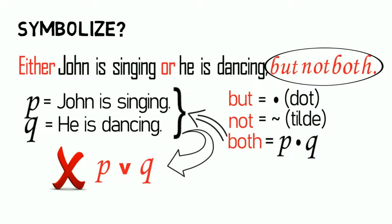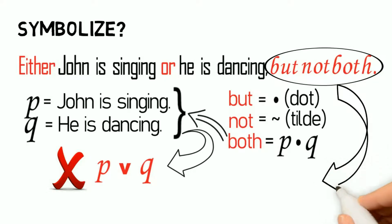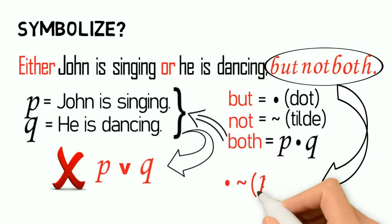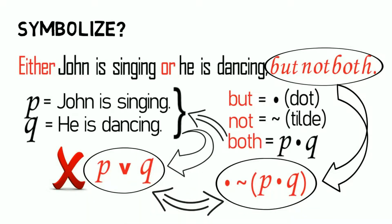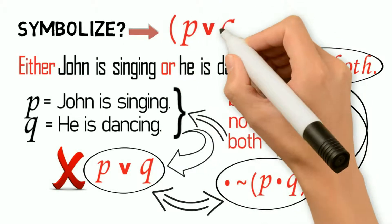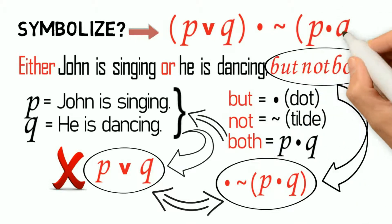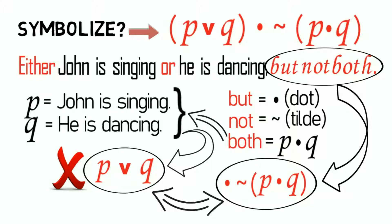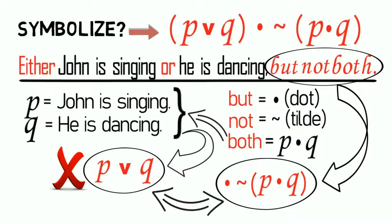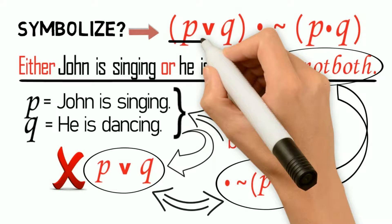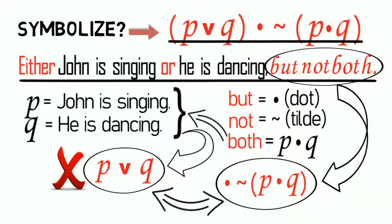Thus the phrase 'but not both' is symbolized as follows: 'but not (P and Q),' written as '· ~(P · Q).' Now if we add this symbol to the previous statement 'either P or Q,' we arrive at 'either P or Q, but not both P and Q.' Thus the symbol for the exclusive disjunction 'either John is singing or he is dancing but not both' is 'either P or Q but not both P and Q.'